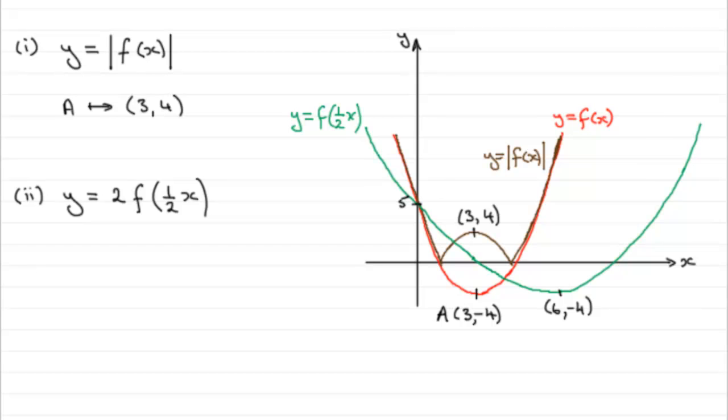So what I would expect to see is something like this. The graph then of y equals 2f of a half x. These points stay invariant. This point at 5 has now shifted up to 10. Okay, this would be 10 on here.